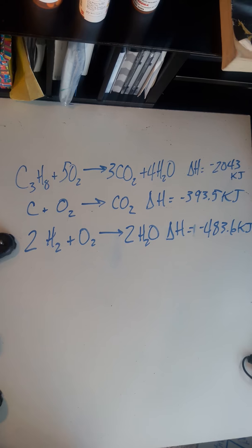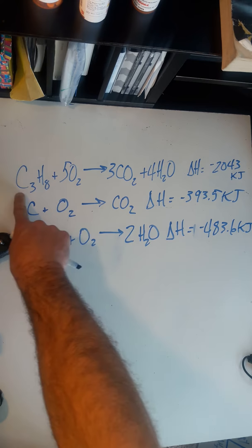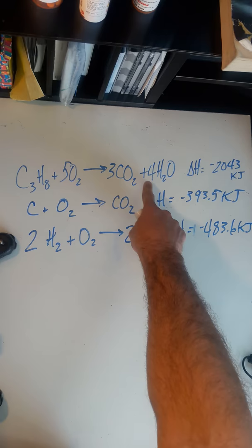So here we have propane going through combustion, and this is a balanced chemical reaction. Propane plus five moles of oxygen gas yields three moles of carbon dioxide and four moles of water.